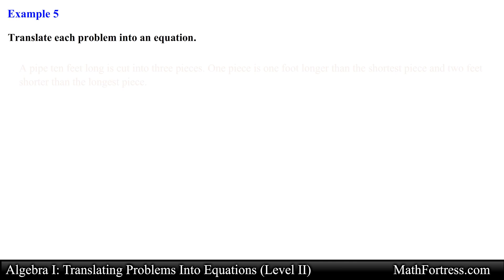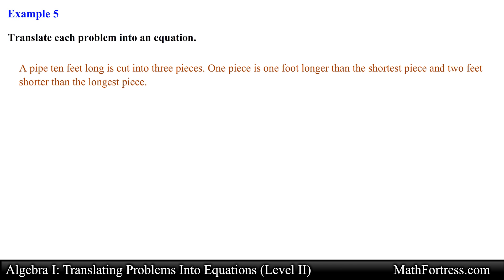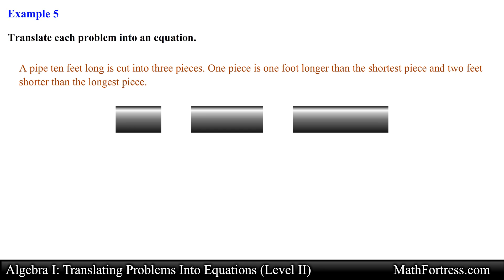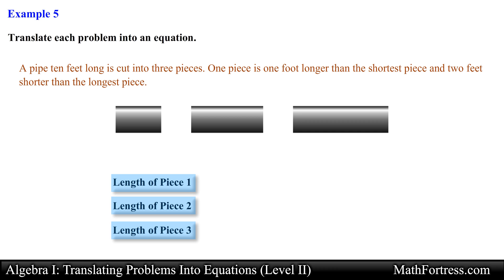Let's go over the final example. A pipe 10 feet long is cut into 3 pieces. One piece is 1 foot longer than the shortest piece, and 2 feet shorter than the longest piece. This word problem is perhaps the most challenging in this video, so let's use everything we've learned to tackle it. Let's make a drawing of the pipe broken into 3 pieces, then start by identifying the unknowns — we have no idea how much each piece measures, so the length of each piece will be our unknowns.